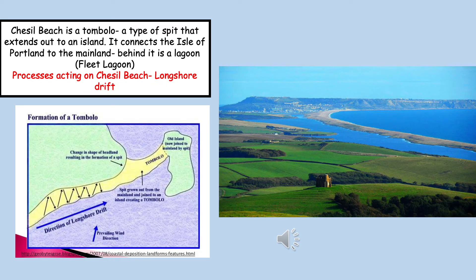The final landform you need to know about is a depositional landform called Chesil Beach. Chesil Beach is an example of a tombolo — a type of spit that extends out to sea and connects with an island. In this case it connects to the Isle of Portland. Spits grow and form as a result of longshore drift carrying material along a coastline until there is a change in shape of the headland, resulting in material being deposited into the sea, and over time this spit joined the Isle of Portland.